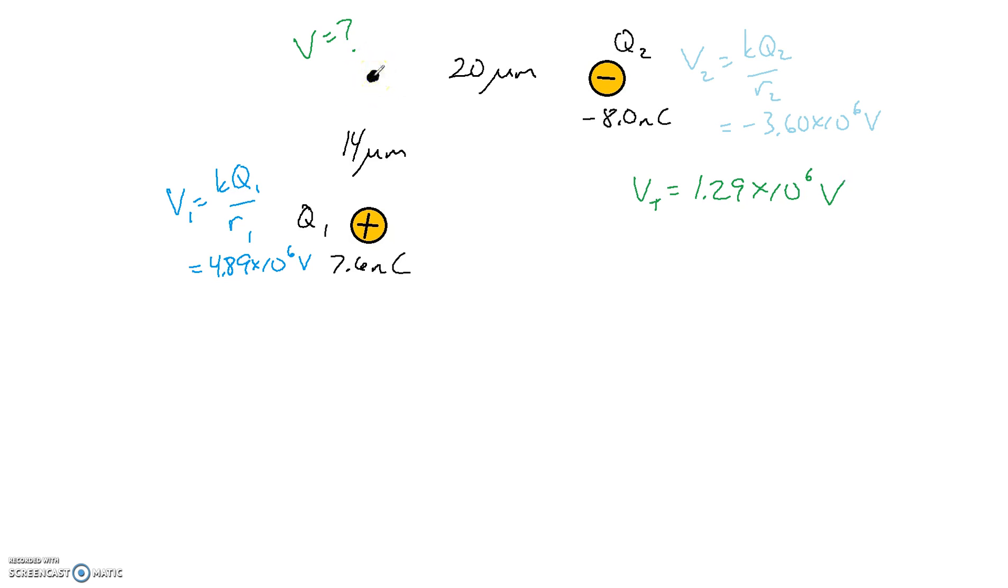Now that total potential can be used to find potential energy, but only if something is put there. So let's take an electron and put an electron there. And if I put an electron there, that electron will then have potential energy, which can then cause it to move. So let's see if we can find out the potential energy of the electron.